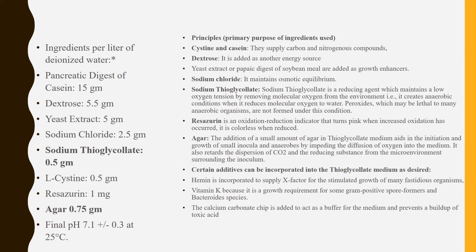The ingredient list of thioglycolate medium: it is always prepared using distilled water. It contains peptic digest of casein, dextrose, yeast extract, sodium chloride, sodium thioglycolate, L-cysteine, resazurin, and agar. The pH should be 7.1 ± 0.3 at 25°C.